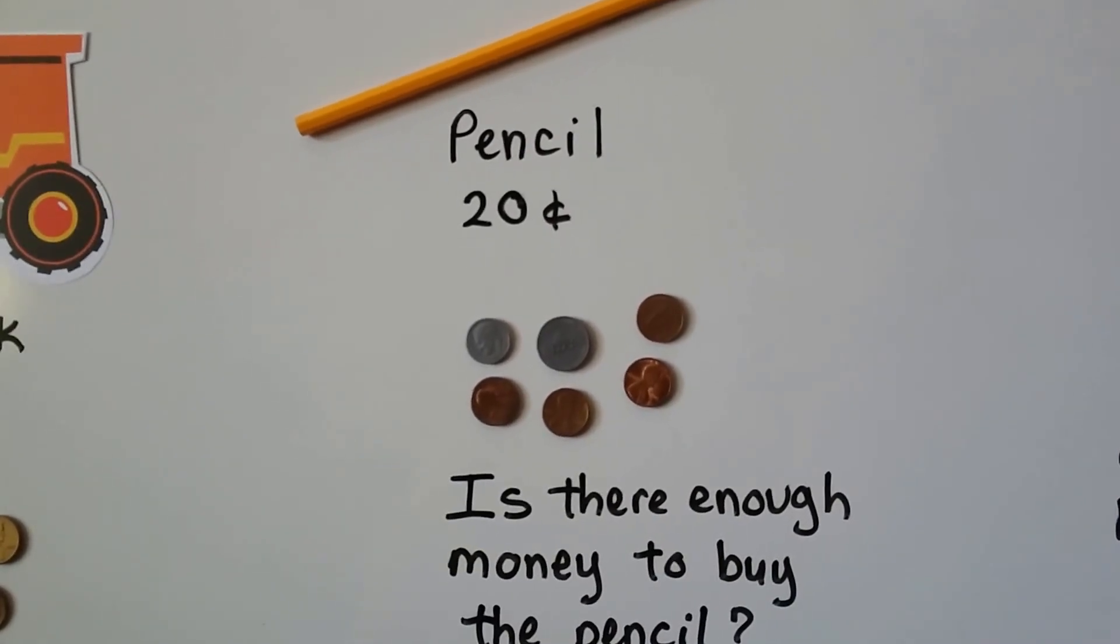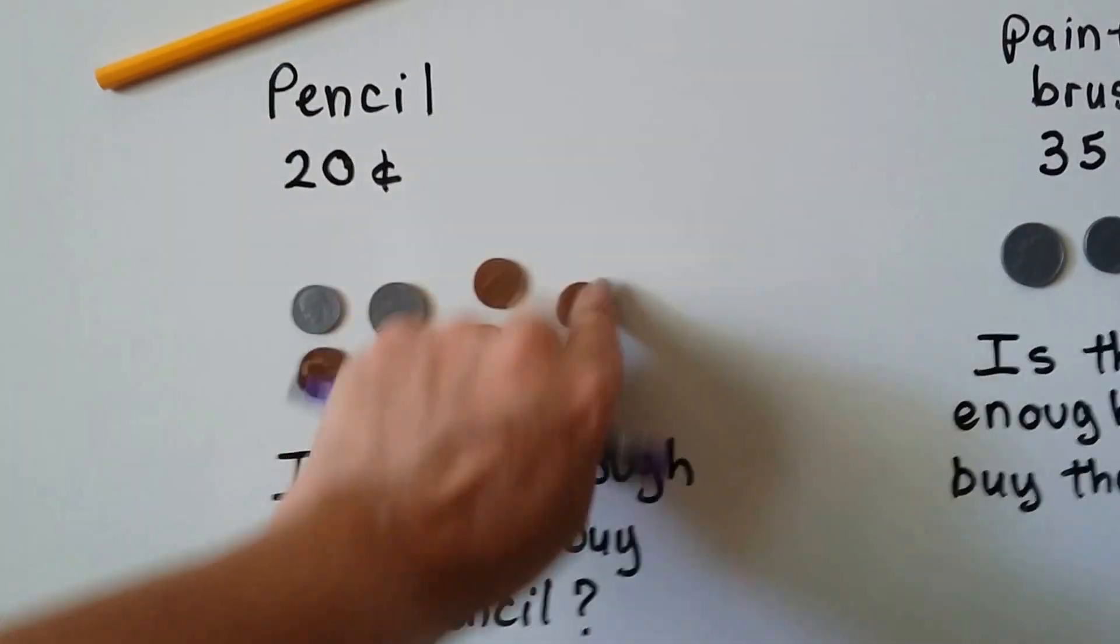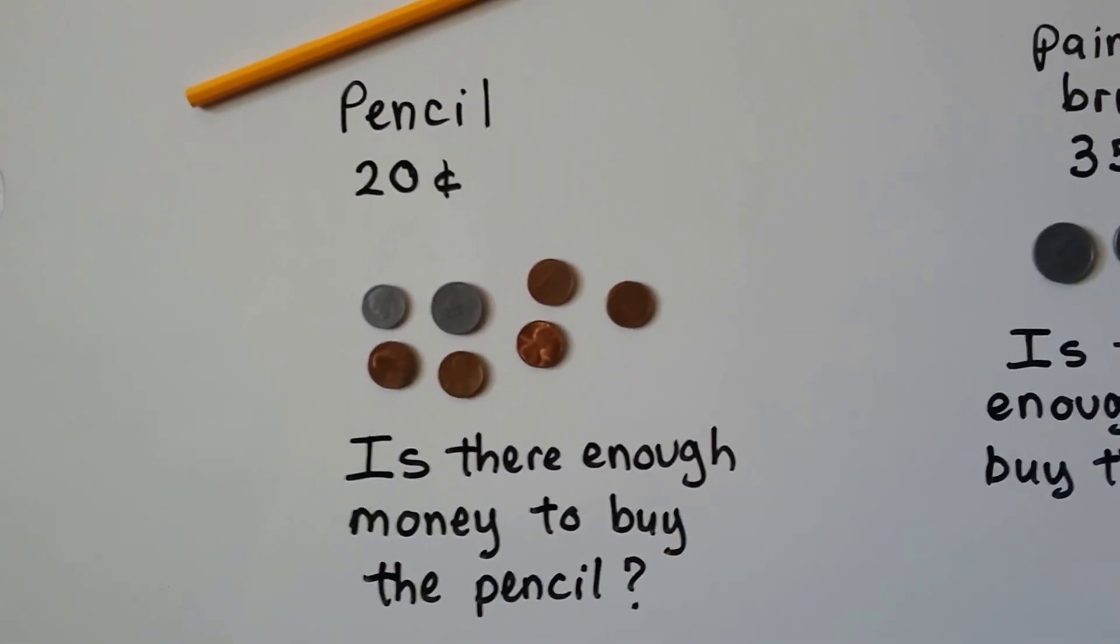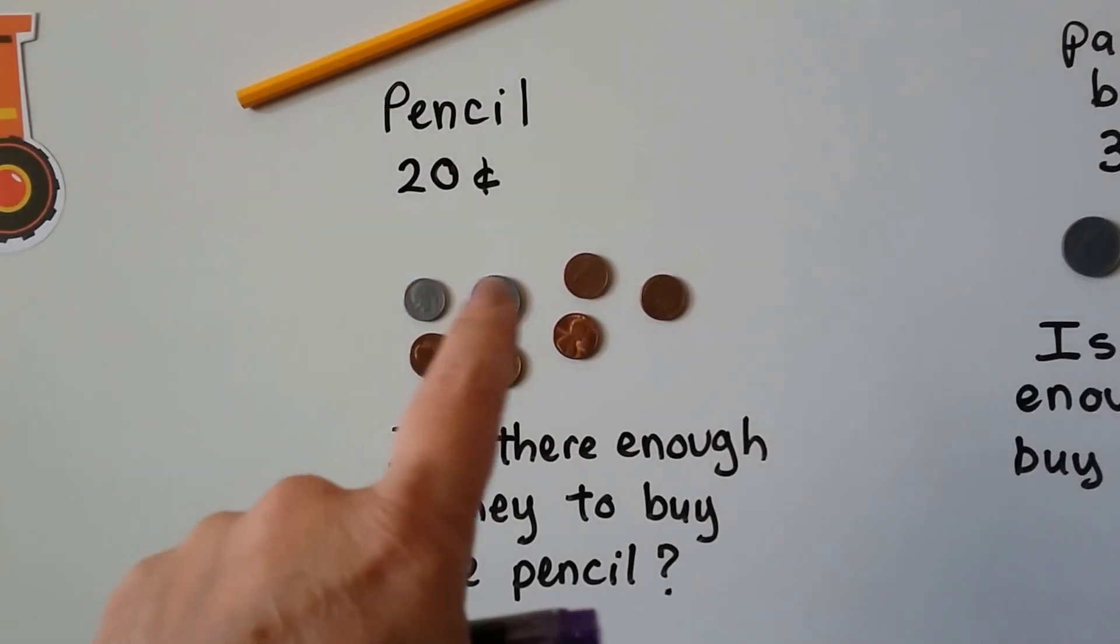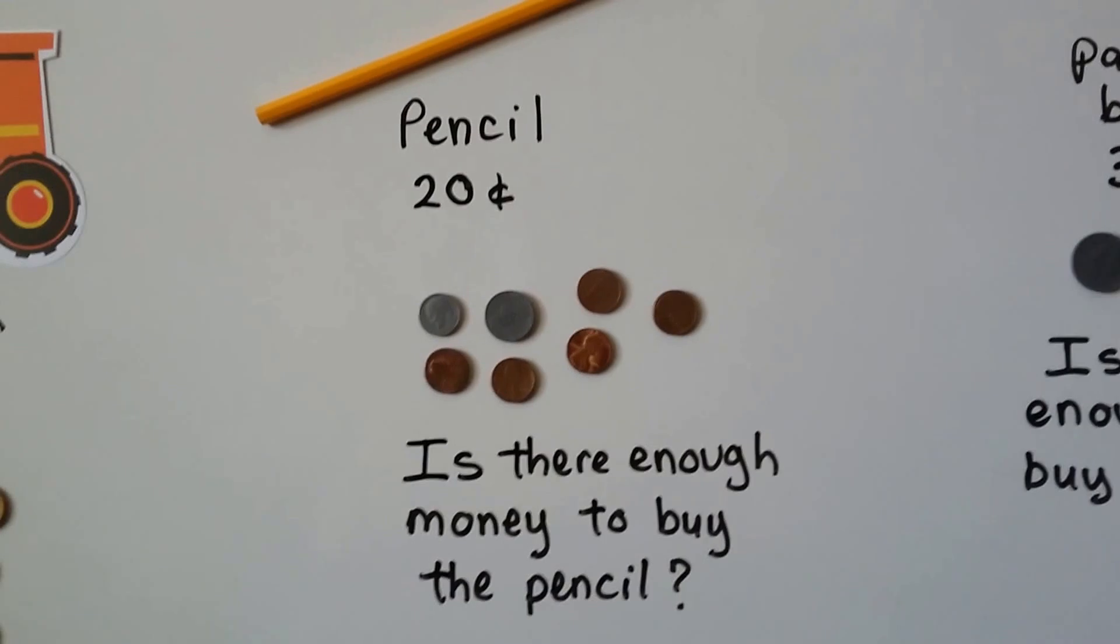Do you know how much more we need to buy that pencil? We've got 19 cents. If we had one more penny, we'd have 20 cents. We'd have 15, 16, 17, 18, 19, 20. Then we would have enough money, wouldn't we?